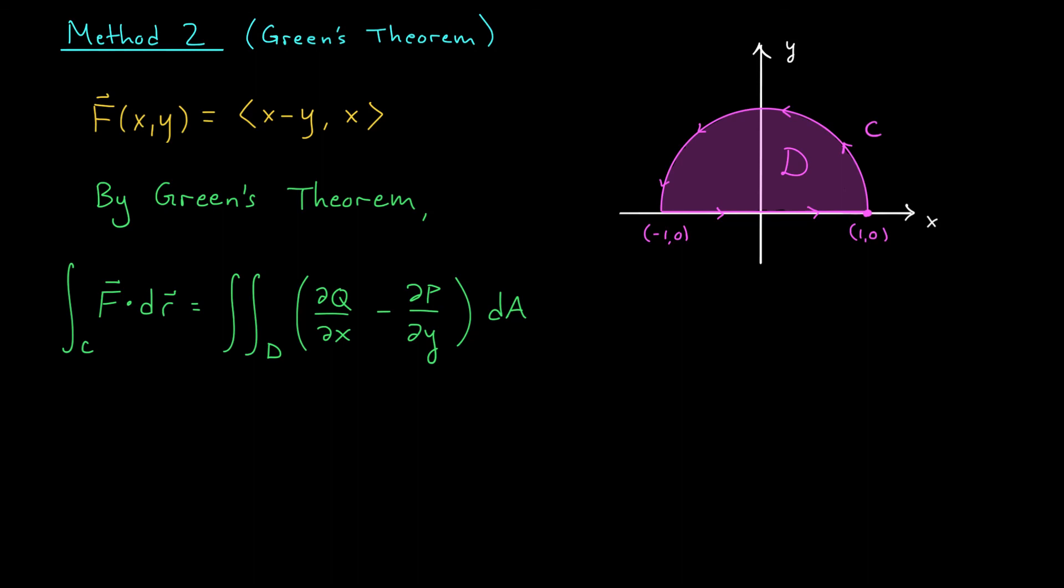Simple, closed, piecewise smooth, positively oriented. Green's theorem applies. According to Green's theorem, this line integral that we're trying to compute is the same as the double integral along the inside of the region of partial Q by partial X minus partial P by partial Y. Well, partial Q by partial X is 1, and partial P by partial Y is minus 1. So this is really the double integral throughout this region of 2DA.